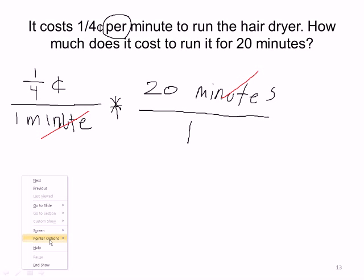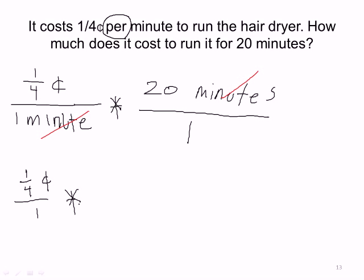this becomes 1 quarter of a penny divided by 1 times 20 divided by 1. So now we just do a straight calculation. OK, so now we can come over here.